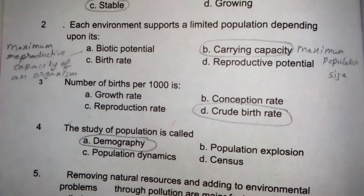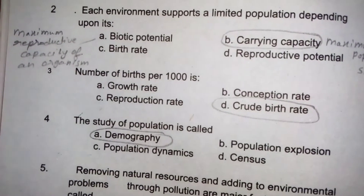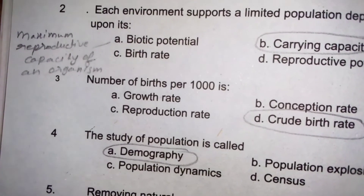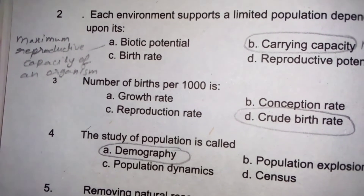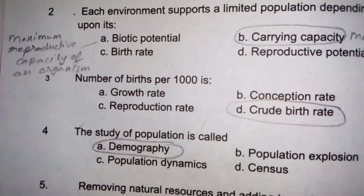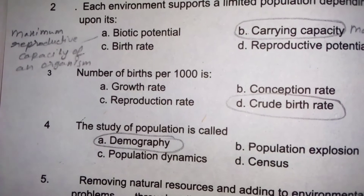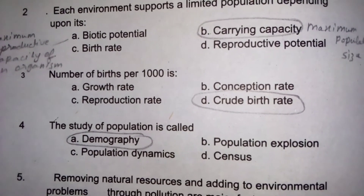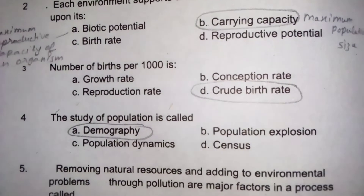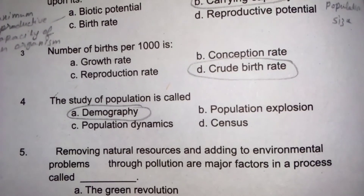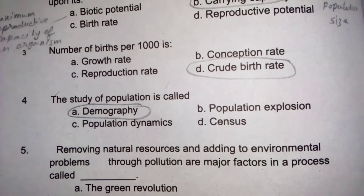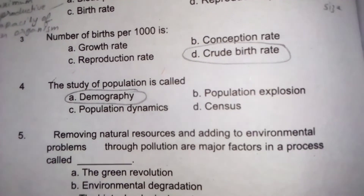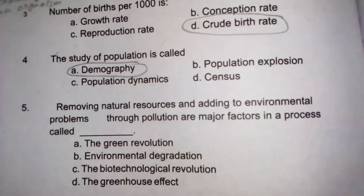Biotic potential is the maximum reproductive capacity of an organism. Number of births per 4000 is called crude birth rate. The study of population is called demography.